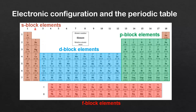S block elements have their valence electrons in the S sublevel. D block elements have their valence electrons in the D sublevel. P block elements have their valence electrons in the P sublevel, and F block elements have their valence electrons in the F sublevel. Groups 1 and 2 are S block elements, groups 3 to 12 are D block elements, and groups 13 to 18 are P block elements.